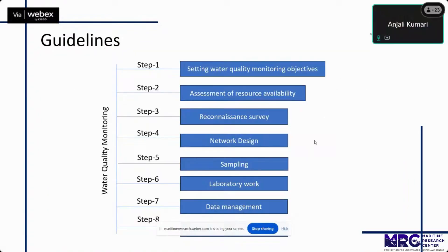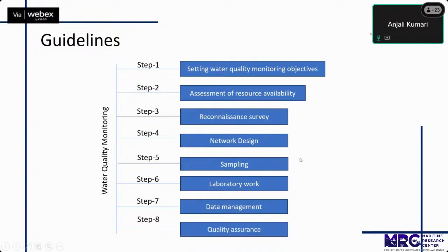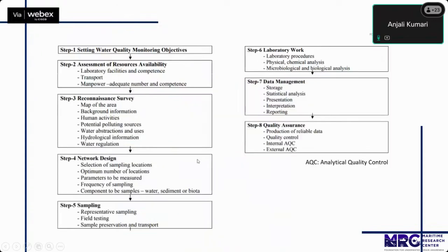After conducting a good amount of literature review, I have developed guidelines for a water quality monitoring system in the following eight steps: setting of water quality monitoring objectives, assessment of resource availability, reconnaissance survey, network design, sampling, laboratory work, data management, and quality assurance.